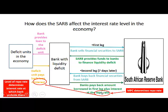The repo rate is the interest rate at which banks have to pay to finance their deficit, and therefore it affects the interest rate at which they are willing to provide loans to the deficit units in the economy. The level of the repo rate determines the interest rate at which banks provide loans.